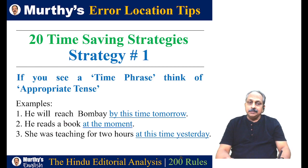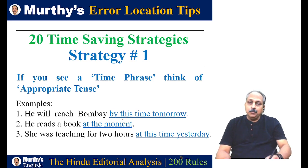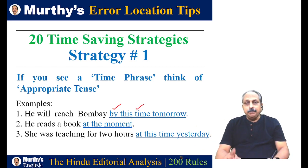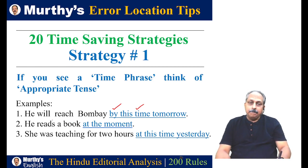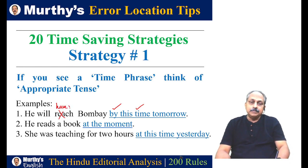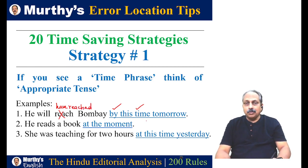Time phrases are important when deciding or spotting errors. 'He will reach Bombay by this time tomorrow.' Here we have the preposition 'by' plus a time that goes into the future. 'By' plus future time requires future perfect tense. But here 'will reach' is simple future — not correct. We have to use future perfect: 'He will have reached Bombay by this time tomorrow.' That is future perfect tense.